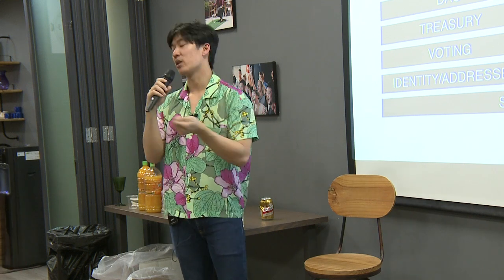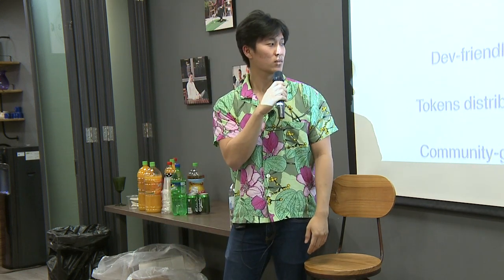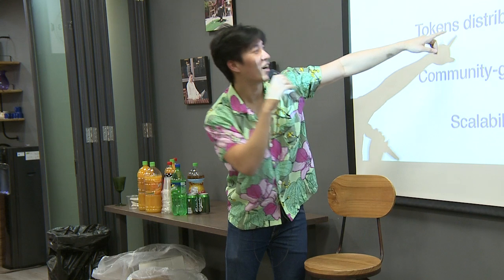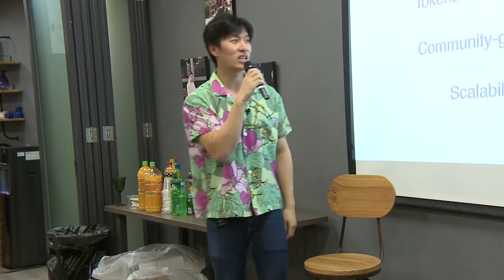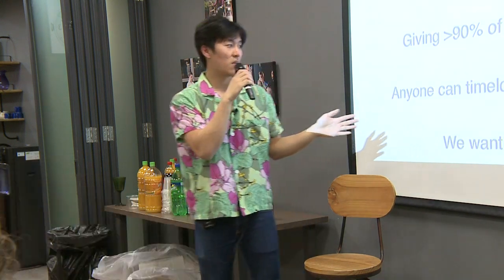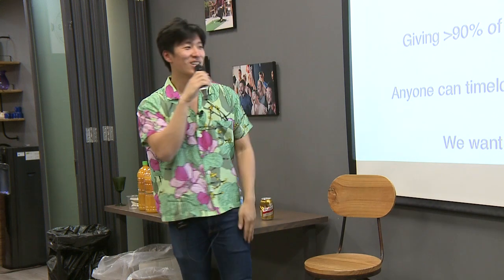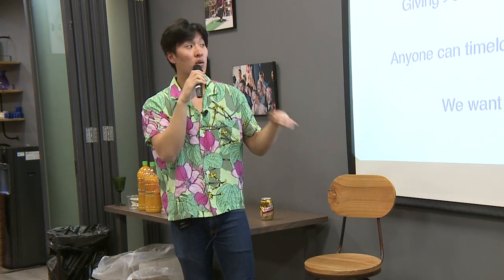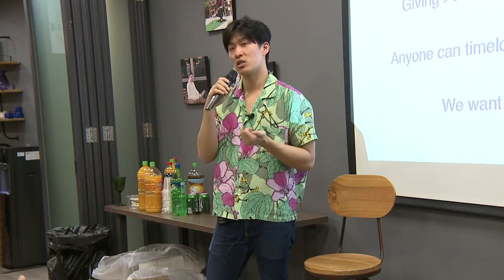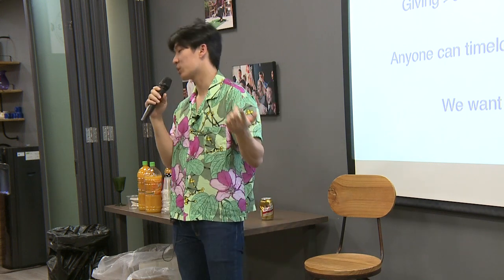Beyond identity, you can vote on different proposals; it has a DAO and inherits all of that from Substrate. On the token distribution side, we're giving away 90% of tokens to the community — ETH holders specifically. We're calling it the lock drop. We want to incentivize ETH holders to participate and bridge those ecosystems, because blockchains themselves are non-zero-sum — they're governing commons.